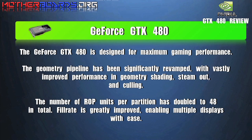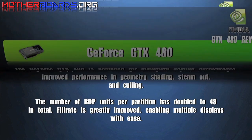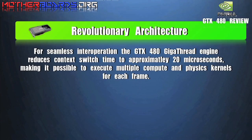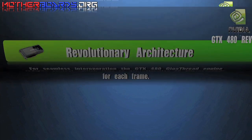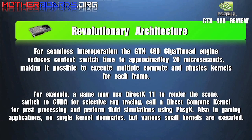The GeForce GTX 480 is designed for maximum gaming performance and for the high-end gamer. This card has been redesigned completely from the ground up and has doubled the number of ROPs as its previous generation cards. Some of the new revolutionary architecture is the new Gigathread engine, which reduces context switch time to approximately 20 microseconds. You can really see how efficient this new Gigathread engine is in the example below.